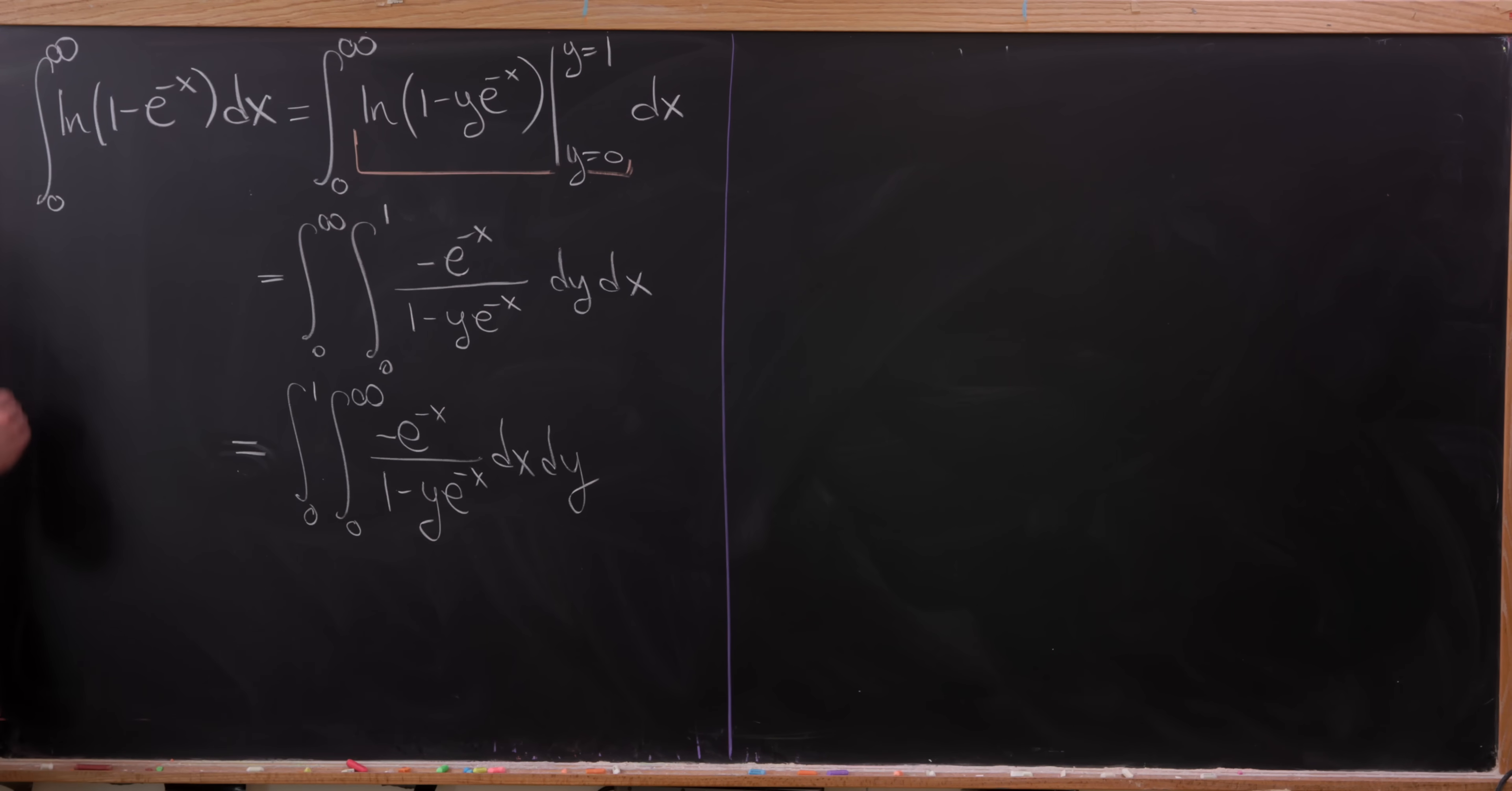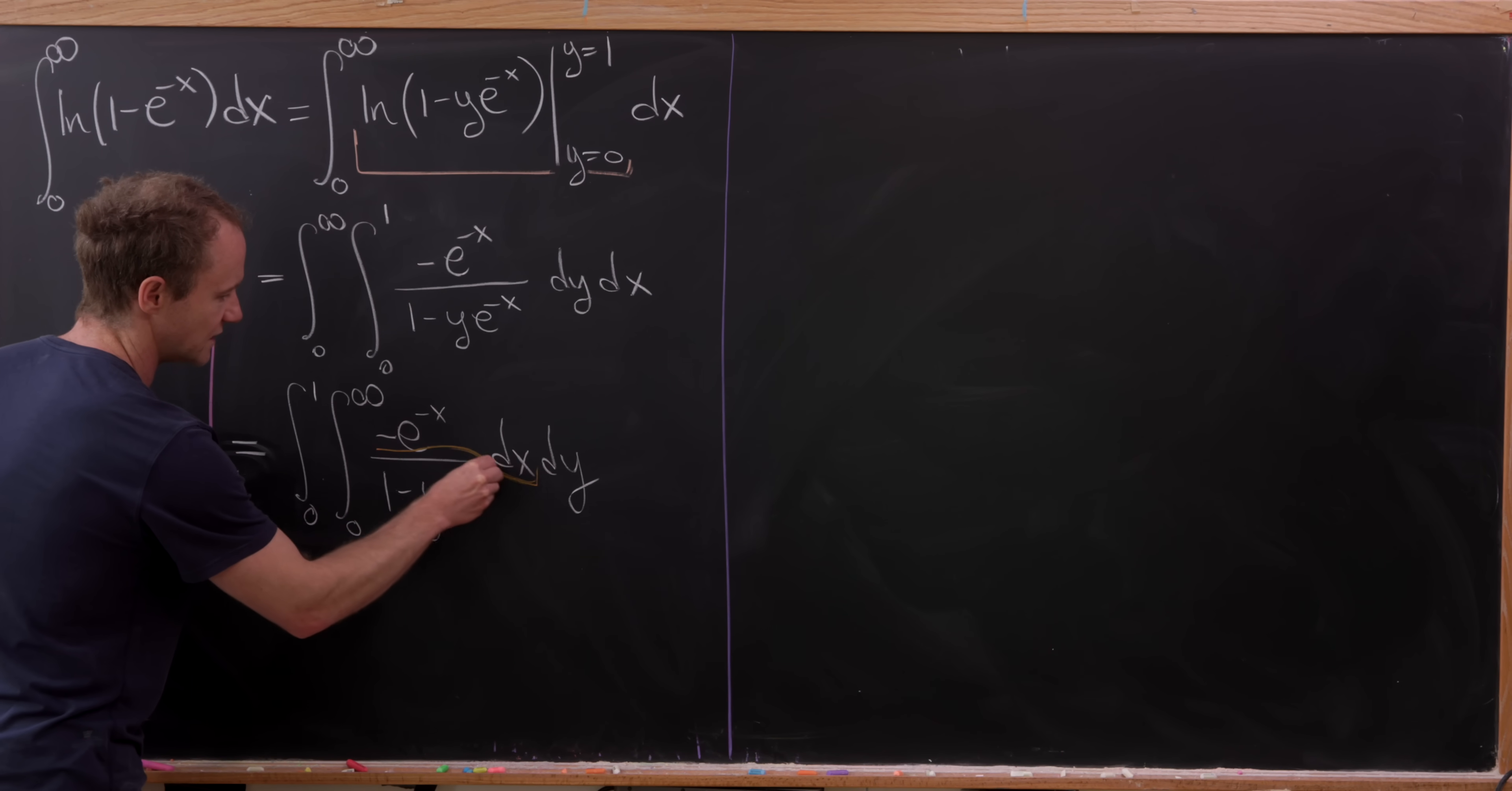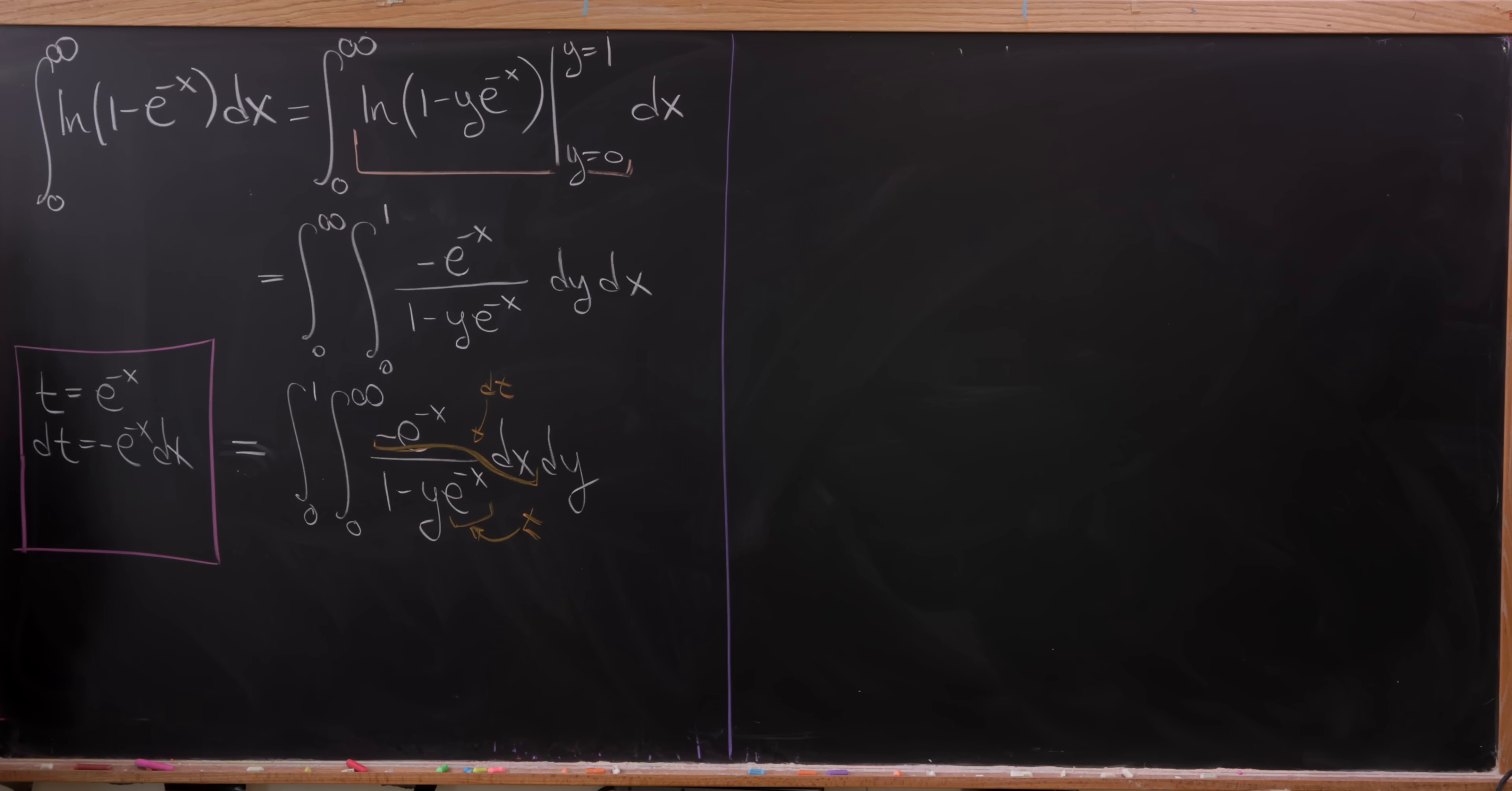What I'd like to observe at this point is if I introduce a new variable, which we'll call t, and set t equal to e to the minus x, we'll see that dt is equal to minus e to the minus x dx. Observe that that's going to take care of this bit right here, which is in the numerator—that's my dt component. And then I've got this function right here in the denominator, which is t.